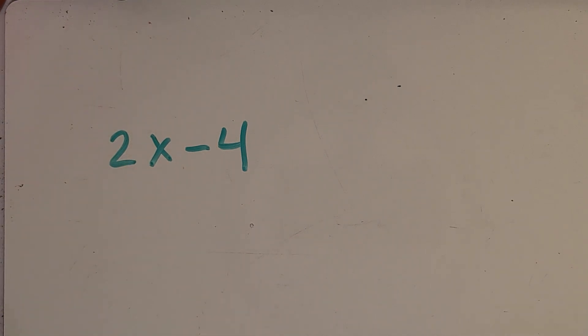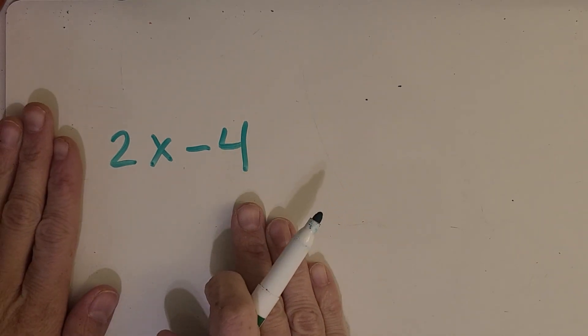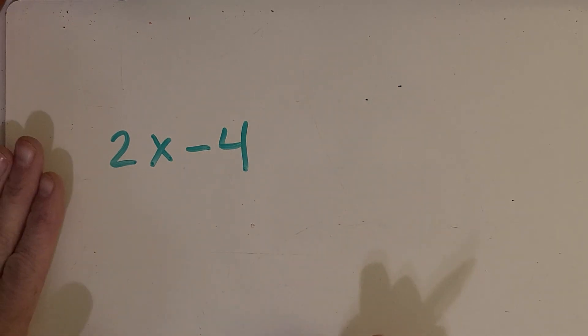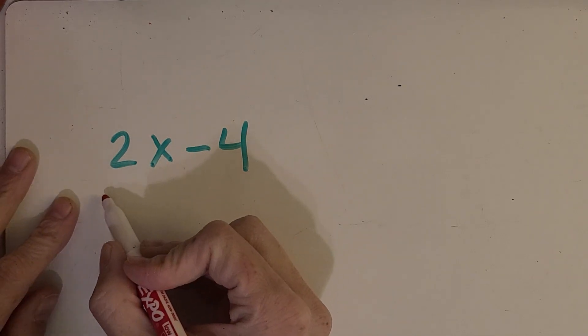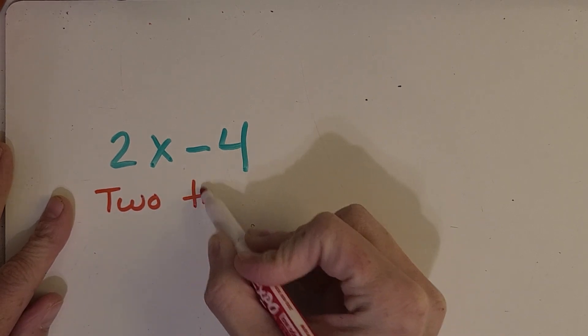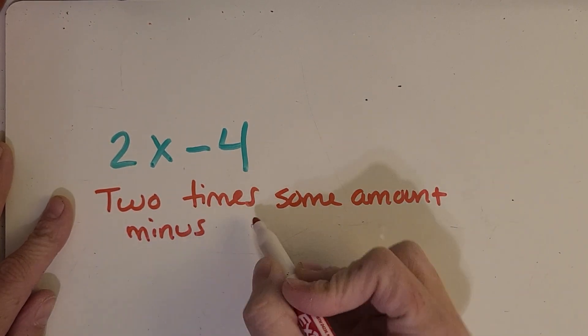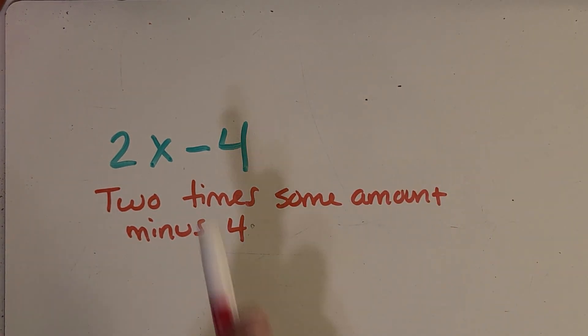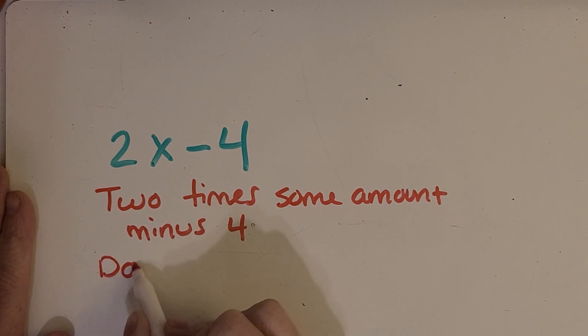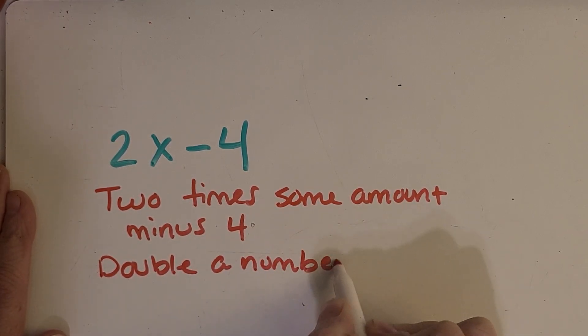All right, now we're gonna try another type of activity that goes with this where I give you an expression and I want you to give me a verbal expression. So what I mean by that is you're just talking through what would this example tell you to do. So I'm gonna go first and I want to see if you can come up with another way to describe it. Here's my example. So I would, I could say this is two times some amount minus four. So can you think of another way to describe that expression in your own words?